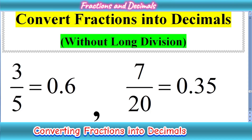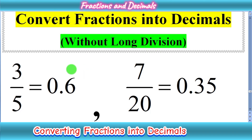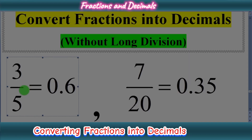Hi guys, welcome to my YouTube channel. In this video we are going to discuss how to convert fractions into decimals without long division. Today I will tell you the shortcut method. We have two types of questions: first is 3 upon 5, which is equal to 0.6 after conversion, and second is 7 upon 20, which is equal to 0.35.